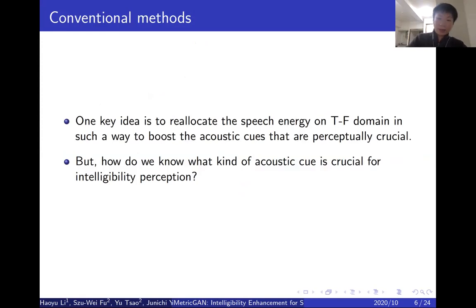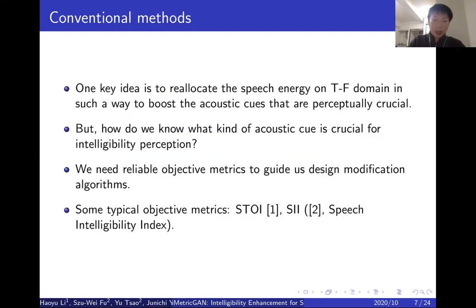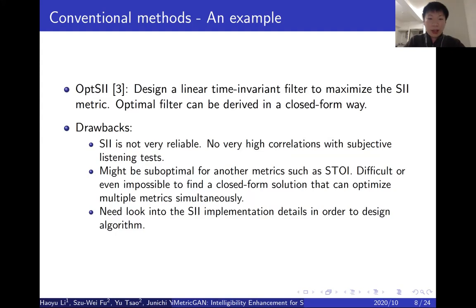Next, let's talk about methods. There are many methods to enhance intelligibility. The general idea shared in many methods is to reallocate the speech energy in the time-frequency domain to boost the acoustic cues that are perceptually crucial. But the question is, how can we know what kind of acoustic cues are crucial? In practice, we rely on objective metrics to guide us in designing modification algorithms. Some typical objective metrics include STI, or Speech Intelligibility Index. Once we confirm these metrics are reliable, we can design our algorithm to optimize a specific metric. For example, a method named OPTSI was designed as an LTI filter to maximize the SI metric. The optimal filter can be derived in a closed-form solution. This is a good method, but still has several drawbacks.